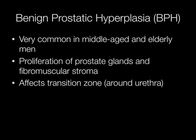Benign prostatic hyperplasia, or BPH, is very common in middle aged and elderly men. It is caused by proliferation of prostate glands and the fibromuscular stroma in which they lie, and it affects the transition zone, which is the area of the prostate around the urethra.